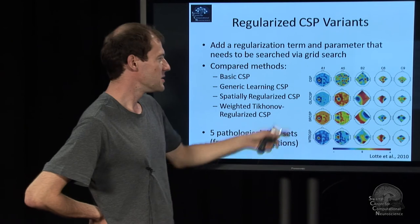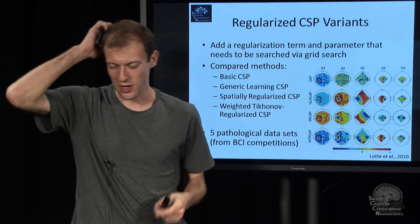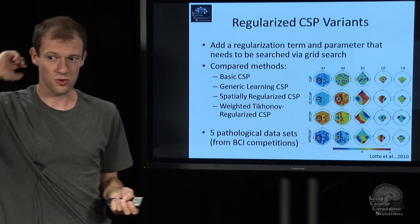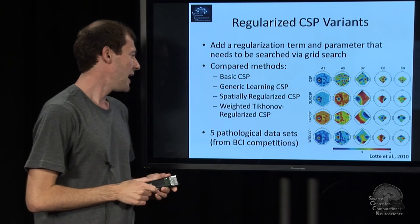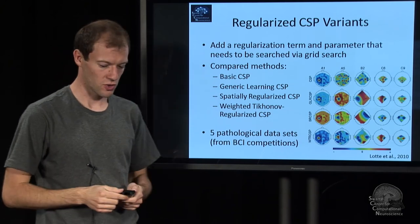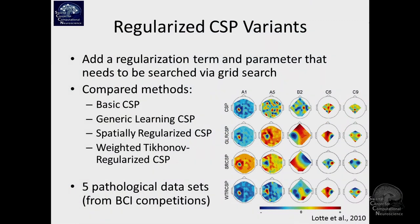These regularized methods have a regularization parameter optimized using cross-validation. They are also in the toolbox, so they're quite useful if you have the time to calculate that. These data come from the BCI competition, by the way.